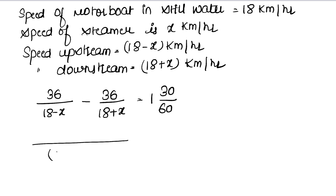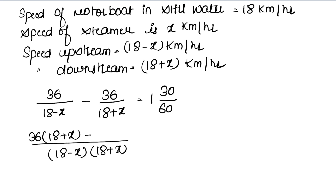Taking LCM of (18 minus x) and (18 plus x): we multiply 36 by (18 plus x) minus 36 by (18 minus x), all over (18 minus x)(18 plus x), equals 3/2.